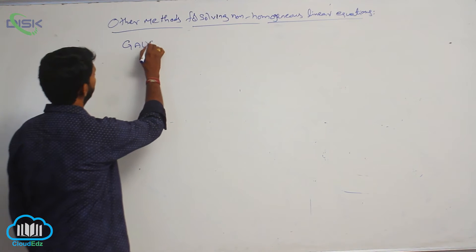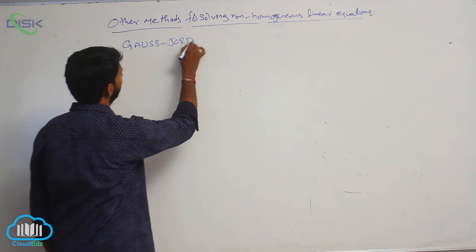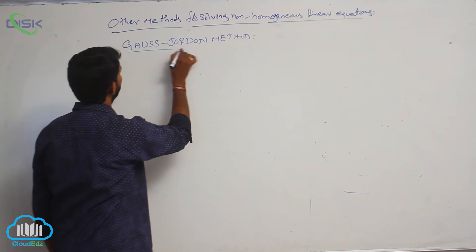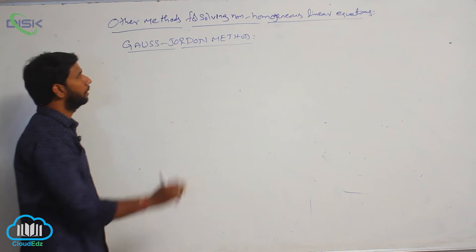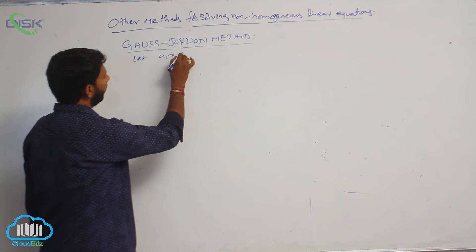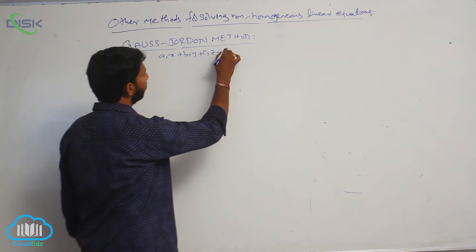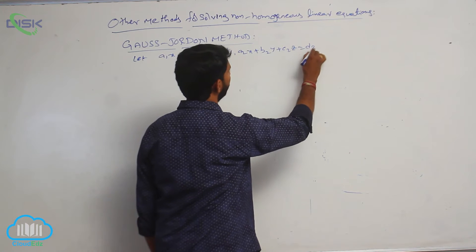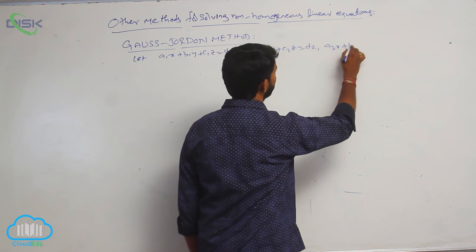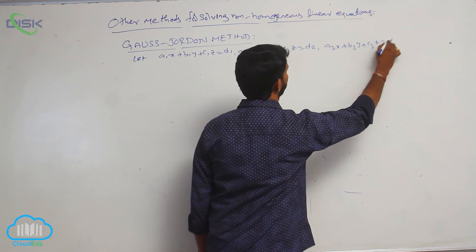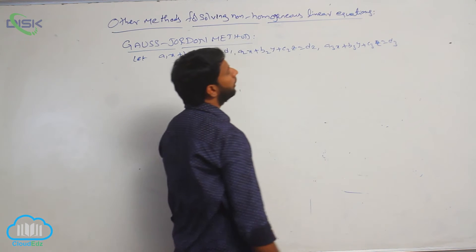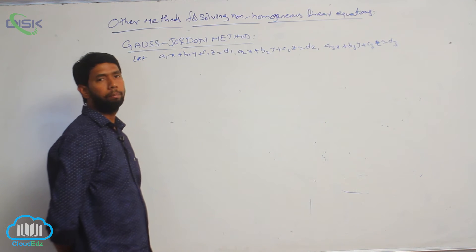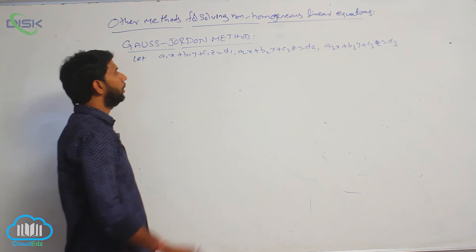The next method is the Gauss-Jordan method. Let the equations be a1x + b1y + c1z = d1, a2x + b2y + c2z = d2, a3x + b3y + c3z = d3. This system of linear equations can be arranged in an augmented matrix.